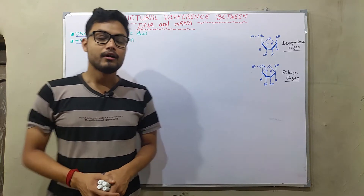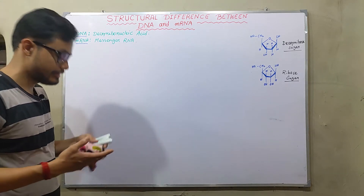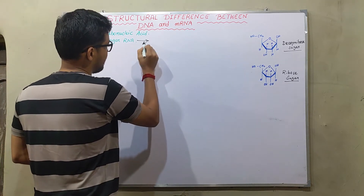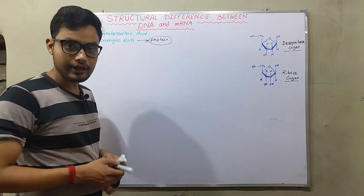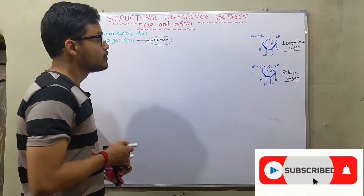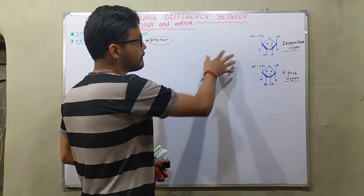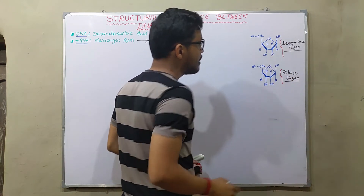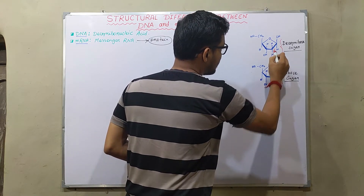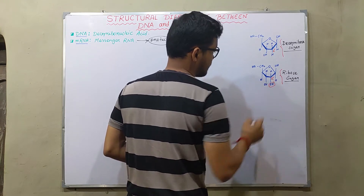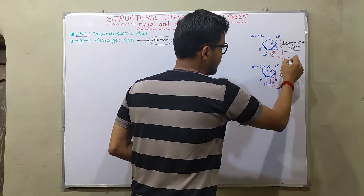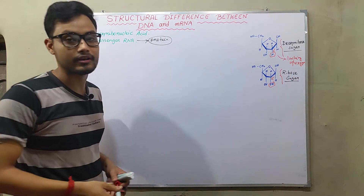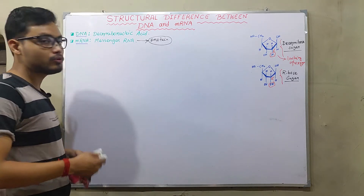DNA stands for deoxyribose nucleic acid; mRNA stands for messenger RNA, a special kind of RNA which is transcribed into protein — so from mRNA we can get a protein. DNA and mRNA differ in their sugars: in mRNA, ribose sugar is observed, but in DNA there is deoxyribose sugar. At the two-prime carbon, in RNA or mRNA there is an OH group, while in DNA there is a lack of oxygen.